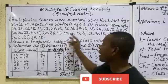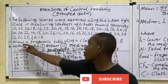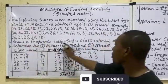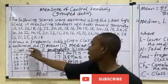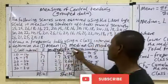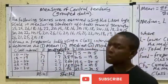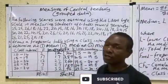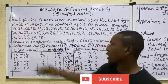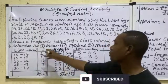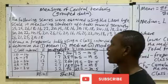The scores are highlighted on the board. The question is: draw a frequency table using a class interval of five and determine the mean, median and mode. The first thing is to draw your class interval, put out the frequency, midpoint and all that.